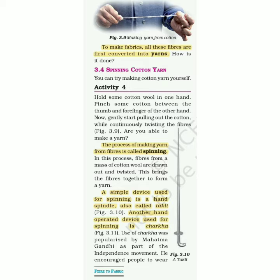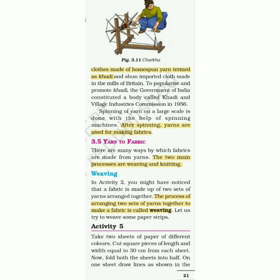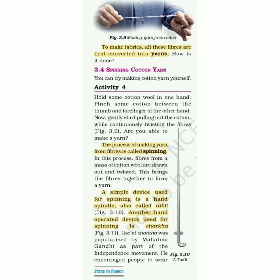You can try making cotton yarn yourself. Do Activity 4: Hold some cotton wool in one hand. Pinch some cotton between the thumb and forefinger of the other hand. Now gently start pulling out the cotton while continuously twisting the fibers — please see figure 3.9. The process of making yarn from fiber is called spinning. In this process, fibers from a mass of cotton wool are drawn out and twisted, bringing the fibers together to form a yarn.